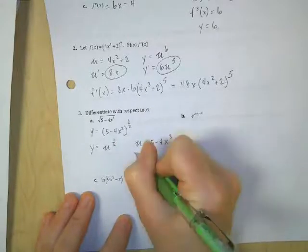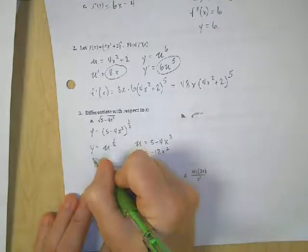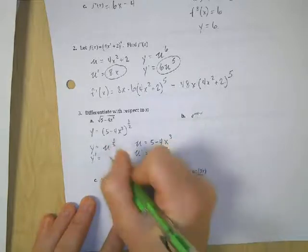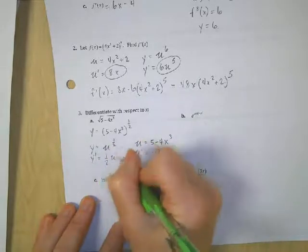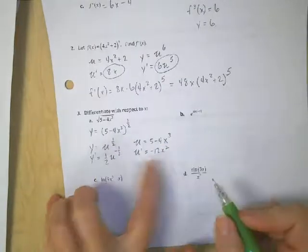take the derivative of that, I get negative 12x squared. Take the derivative of the y in terms of u. I get 1 half u to the minus 1 from 1. That gets me negative 1 half. Now I need to multiply those together.